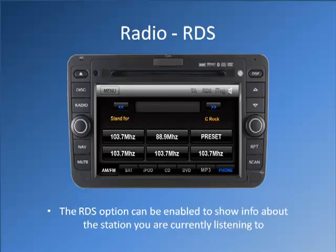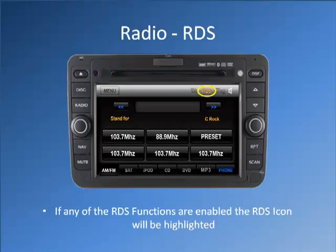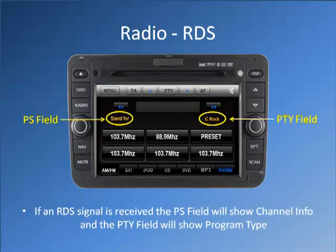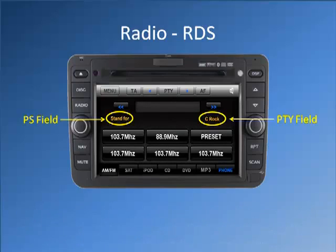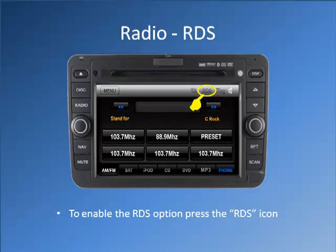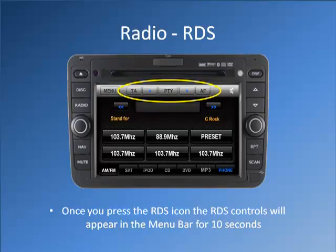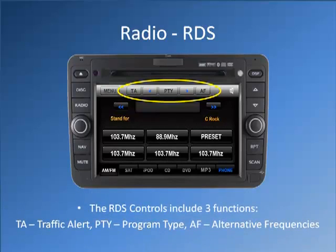The RDS option can be enabled to show information about the station you are currently listening to. If any of the RDS functions are enabled, the RDS icon will be highlighted. If an RDS signal is received, the PS field will show channel information and the PTY field will show program type. To enable the RDS option, press the RDS icon. Once you press the RDS icon, the RDS controls will appear in the menu bar for 10 seconds. The RDS controls include three functions: TA for traffic alert, PTY for program type, and AF for alternative frequencies.